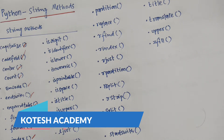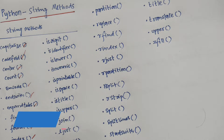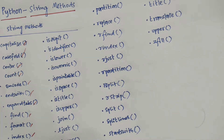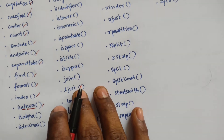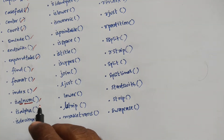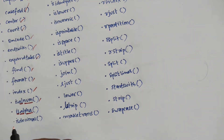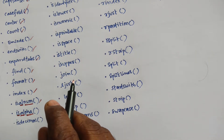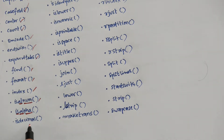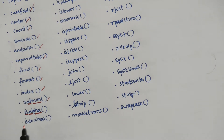Next is isalnum, which returns true if all characters in the string are alphanumeric — that is, alpha for alphabetic and num for numeric. Next is isalpha, which returns true if all characters in the string are in the alphabet. Next is isdecimal, which returns true if all characters in the string are decimals.